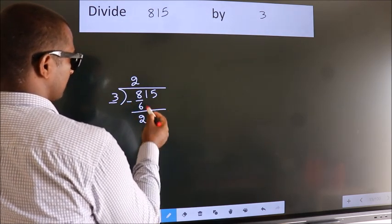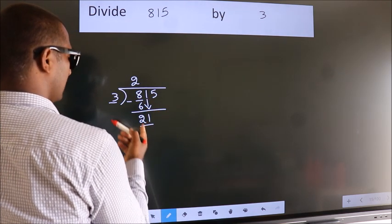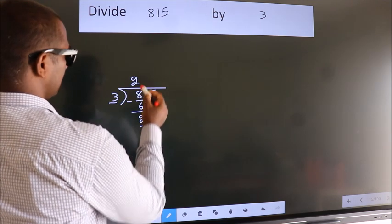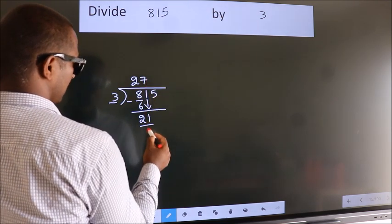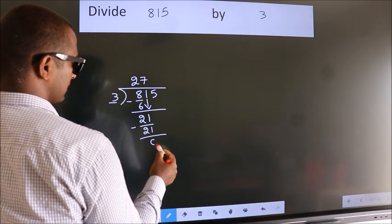After this, bring down the beside number. So 1 down, so 21. When do we get 21 in 3 table? 3 sevenths, 21. Now we subtract. We get 0.